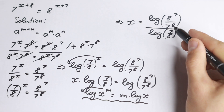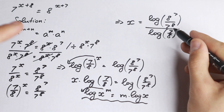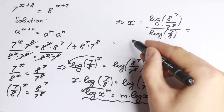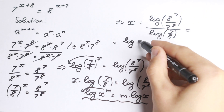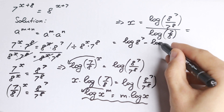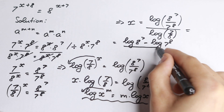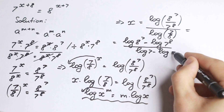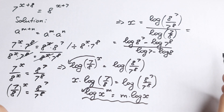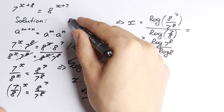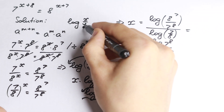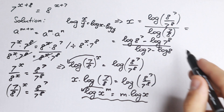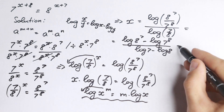But we can simplify further. Since we have a division inside a logarithm, we use the property that log(a/b) equals log(a) minus log(b). Applying this to the numerator: log(8^7) minus log(7^8). And to the denominator: log(7) minus log(8).